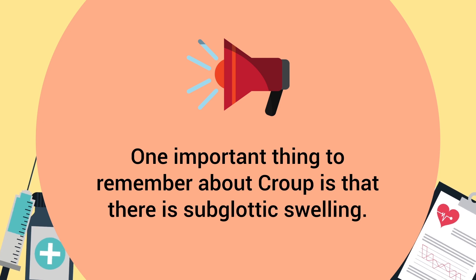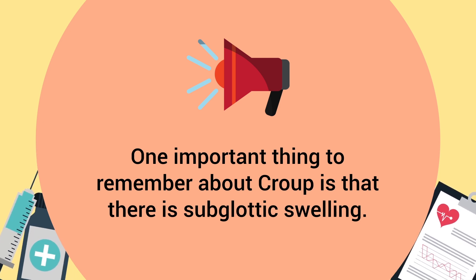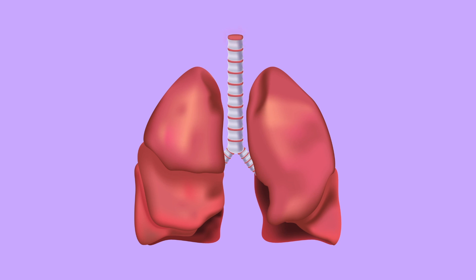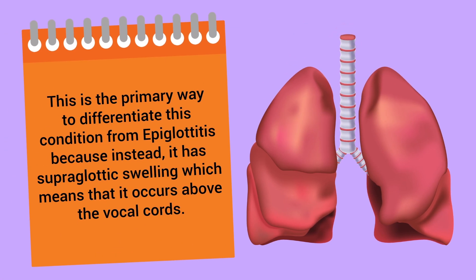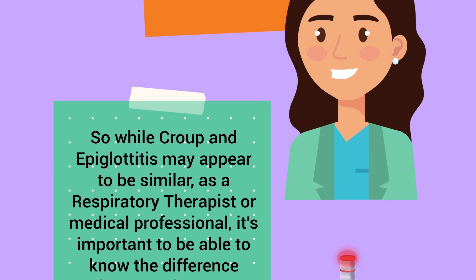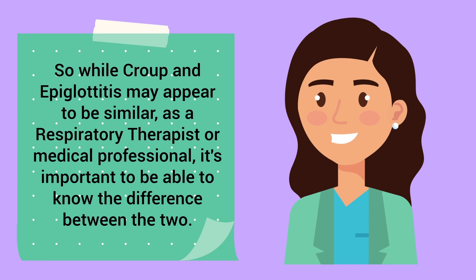One important thing to remember about croup is that there is subglottic swelling, meaning the obstruction occurs below the vocal cords. This is the primary way to differentiate croup from epiglottitis, because epiglottitis has supraglottic swelling, which occurs above the vocal cords. So croup is below; epiglottitis is above.